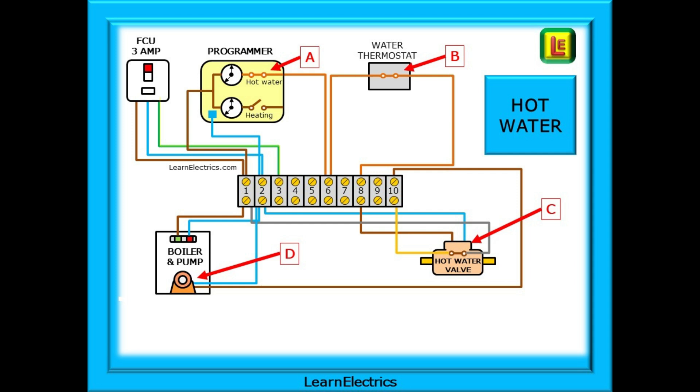As the valve opens, it closes a microswitch inside the valve body. The grey wire at the valve is a permanent 230 volts taken from terminal number 1. With the switch closed, the voltage passes through to the orange wire and travels to terminal number 10. From number 10, 230 volts travels to the pump motor at D and the pump turns on. Because the valve is now open, water will flow around the hot water system.